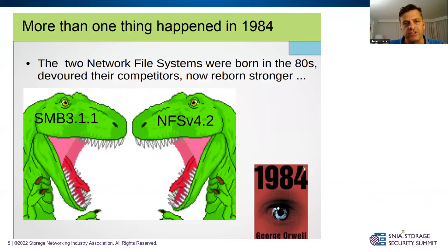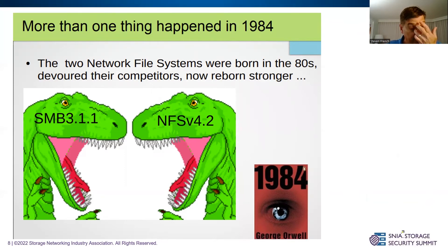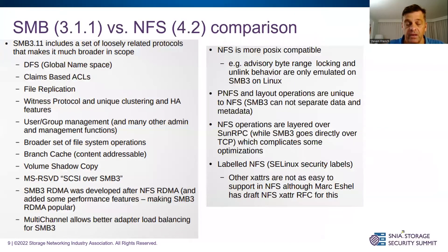To give a bit of historical perspective: back in 1984, two file systems were born coincidentally — NFS and SMB. They've grown and evolved through many dialects: SMB 3.11, NFS 4.2. File systems have come and gone; network file systems, cluster file systems have come and gone. But these two have become the most popular, and it's been an interesting world watching them evolve over more than 30 years.